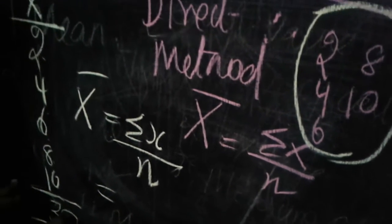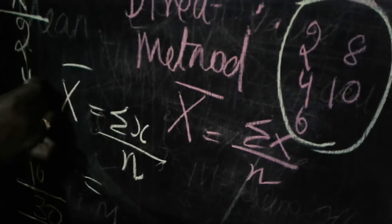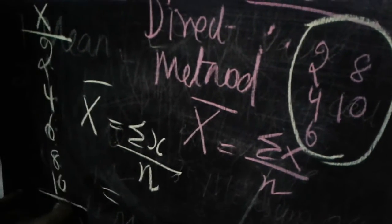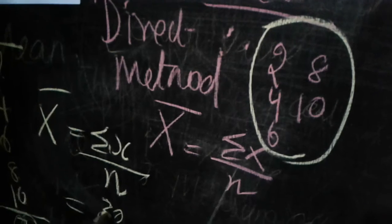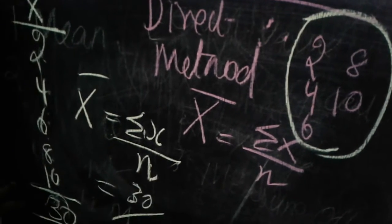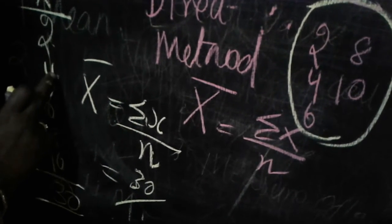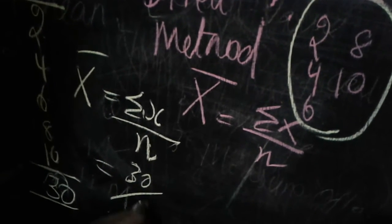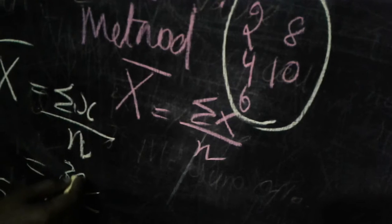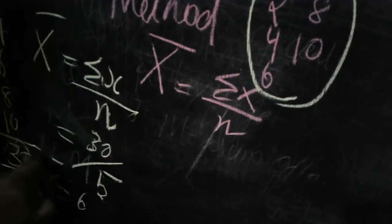We added 2 plus 4 plus 6 plus 8 plus 10 to get sigma x equals 30. Now n is the number of x values given: one, two, three, four, five — so n equals 5. Therefore, x-bar equals 30 divided by 5, which gives us 6. So the mean is 6.